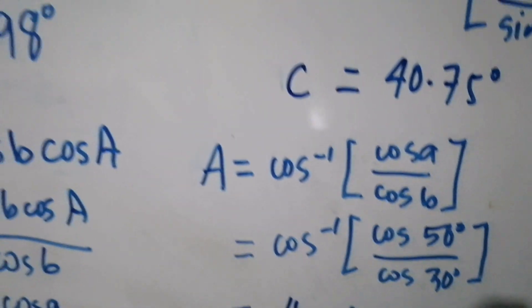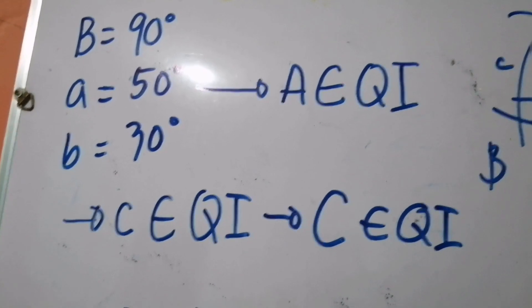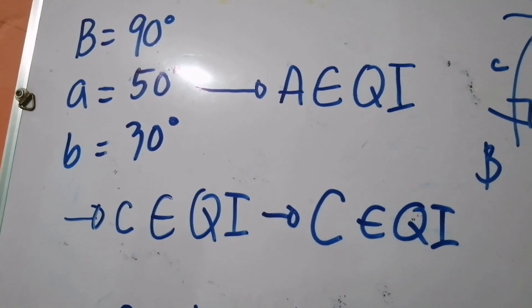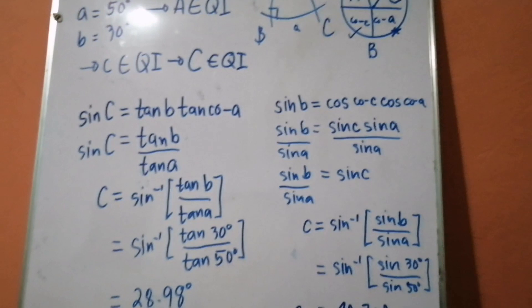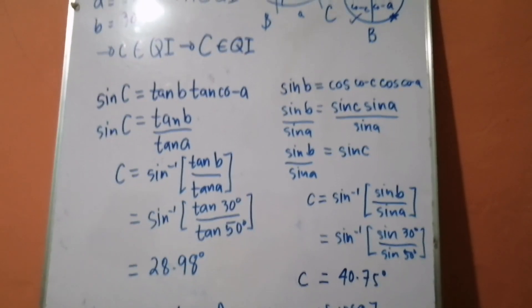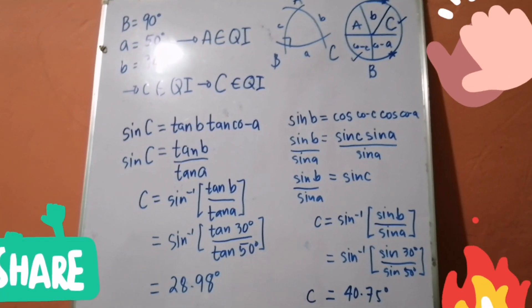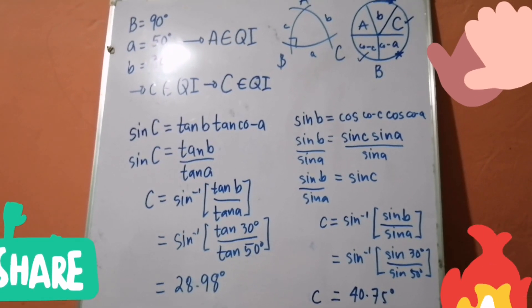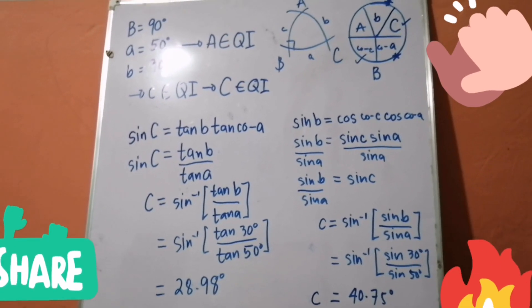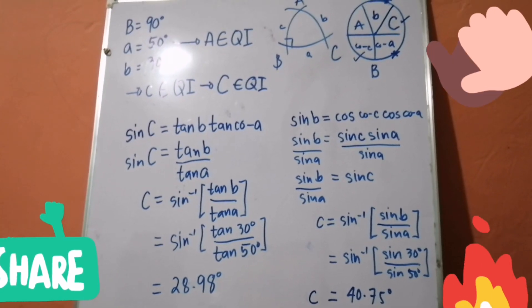We are now done. Angle A is supposed to be in Quadrant 1, and 42.08 degrees is consistent with that. So we have all our answers. I hope you learned something from this. We'll have more examples later on — see you then!